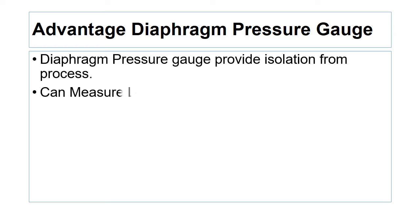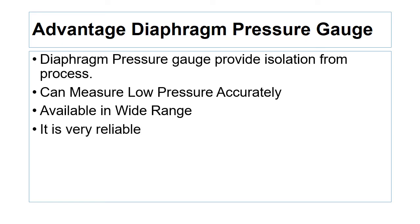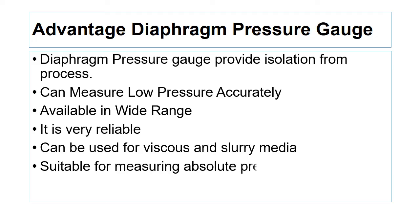The diaphragm pressure gauge is available in a wide range and is very reliable. It can be used for viscous and slurry media, and is suitable for measuring absolute pressure, gauge pressure, and differential pressure.